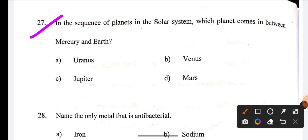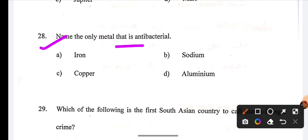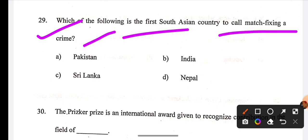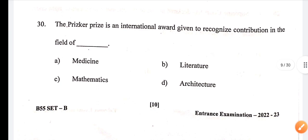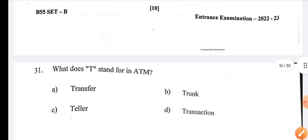In the sequence of planets in the solar system, which planet is between Mercury and Earth? Question 27, the correct answer is Venus. The only metal that is antibacterial? Question 28, the correct answer is Copper. The first South Asian country to criminalize match-fixing? Question 29, the correct answer is Sri Lanka. The Pritzker Prize is given in which field? Question 30, the correct answer is architecture.